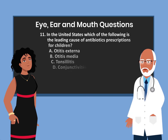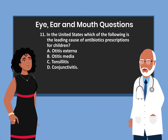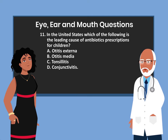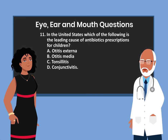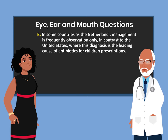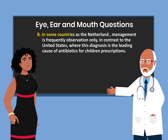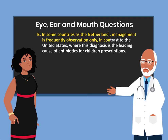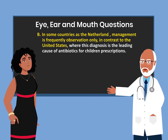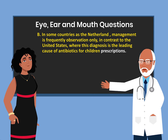Question 11. In the United States, which of the following is the leading cause of antibiotic prescriptions for children? A. Otitis externa. B. Otitis media. C. Tonsillitis. D. Conjunctivitis. The answer is B. In some countries, such as the Netherlands, management is frequently observation only, in contrast to the United States, where this diagnosis is the leading cause of antibiotic prescriptions for children.